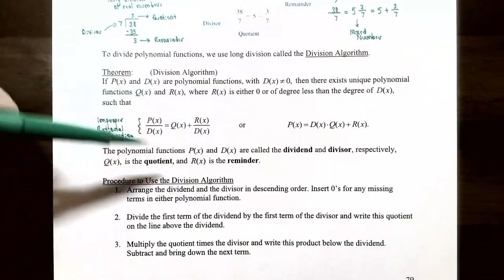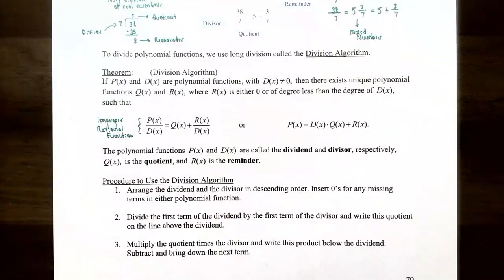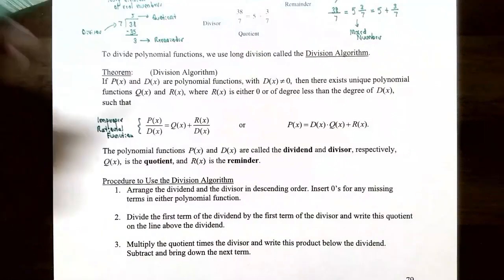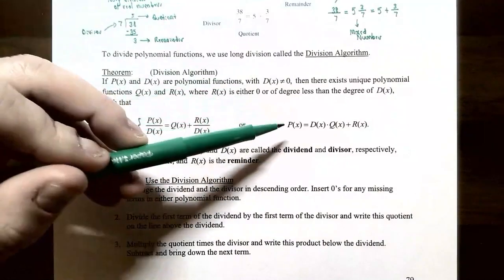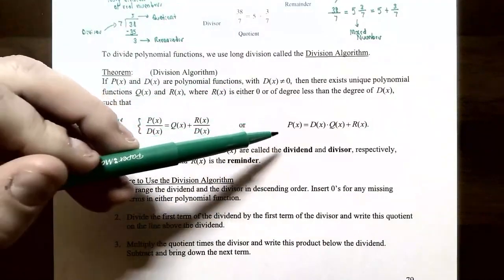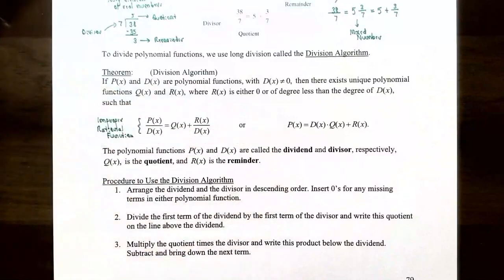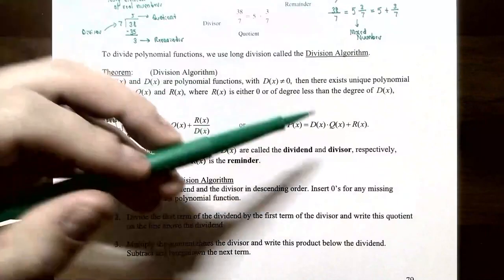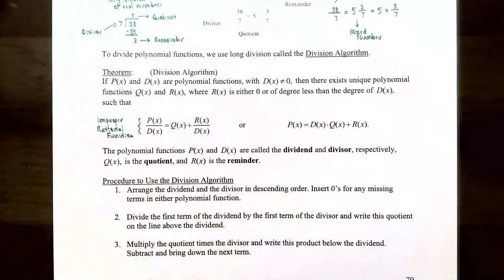This is what's called an improper rational function where P(x) divided by D(x) has a degree larger than the degree of the divisor. The answer is the quotient polynomial Q(x) plus the remainder polynomial R(x) divided by the divisor. Notice that if you multiply both sides by D(x), you get P(x) = D(x) · Q(x) + R(x). This is the division algorithm.